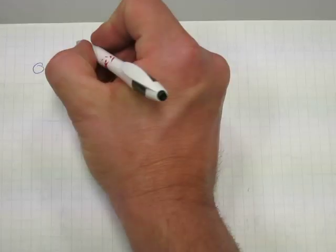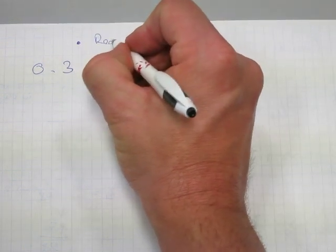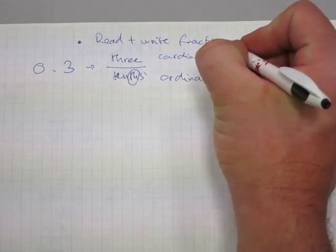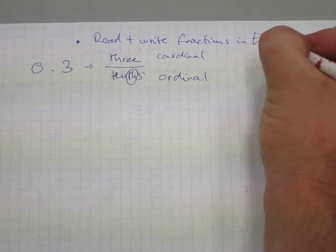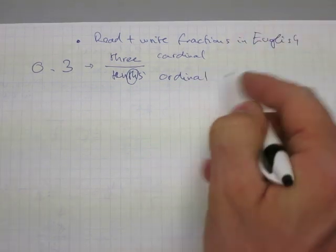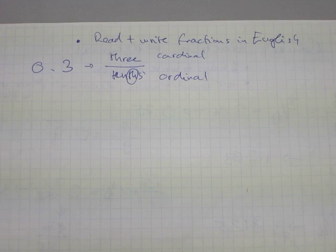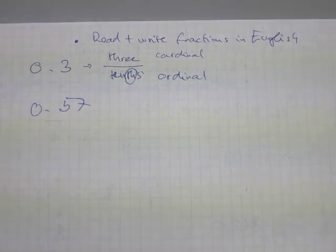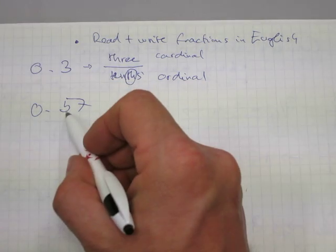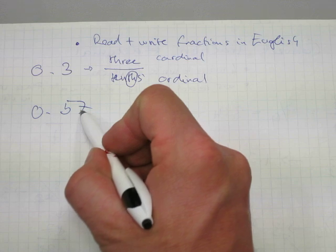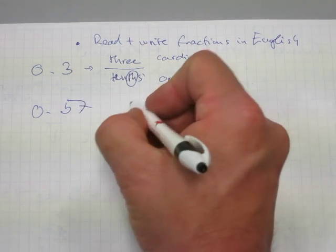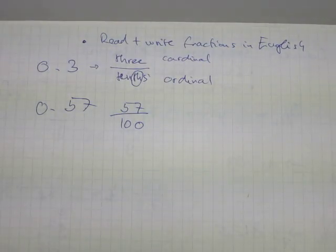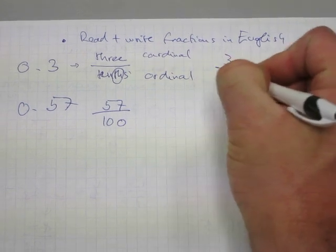And if you watch another title titled read and write fractions in English, that video will also help you with this bit. For example, here is a two digit fraction. You read it as fifty-seven hundredths because the fifty-seven, the last digit is on the hundredths place. So it's 57 over 100. And the previous one was 3 over 10.